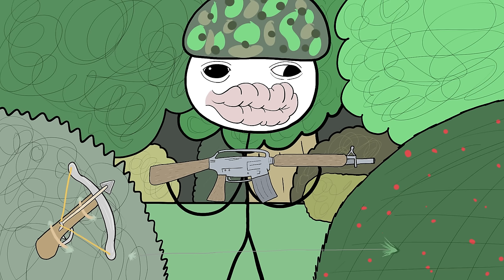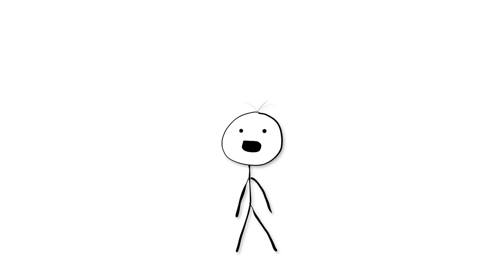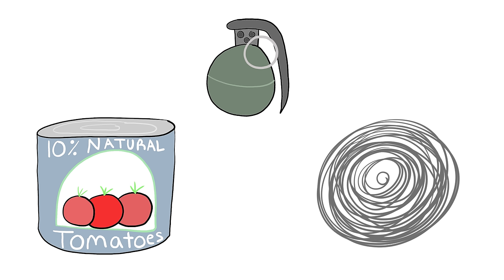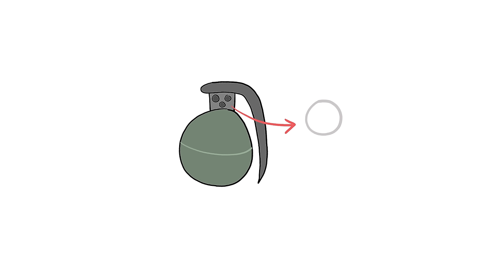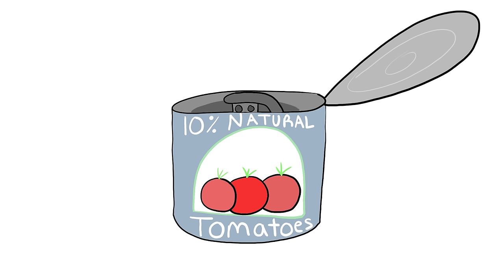Number 3. Tripwires. One of the most terrifying and paranoia-inducing traps involved the use of tripwires. There were many traps that used the tripwire method, but I'll just cover the most common ones, starting with the can grenade. The can grenade consisted of a grenade, a can, and a piece of wire.